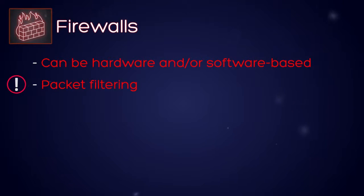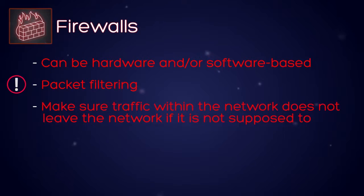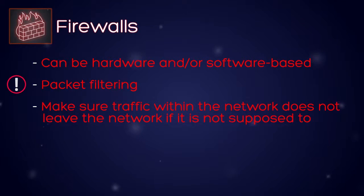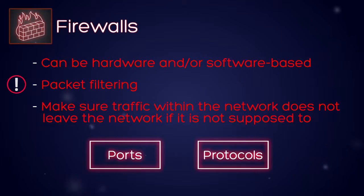The firewall ensures that harmful traffic does not reach the internal part of the network, and it doesn't matter if the network is wired or wireless. The other job of the firewall is to make sure that traffic from inside the network does not make it out if it's not supposed to — this could include confidential information. The two biggest types of filters you will see in firewalls are ports and protocols.